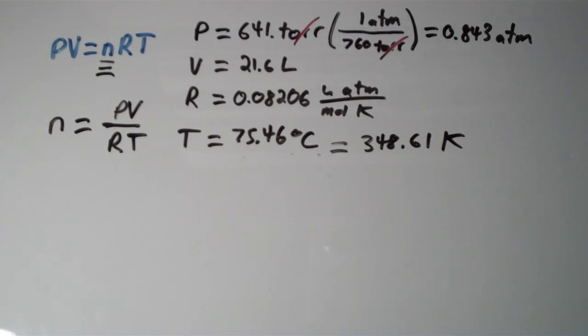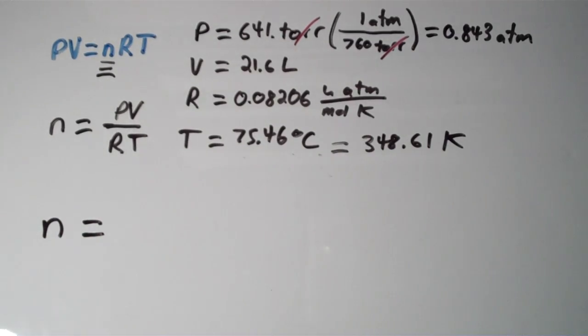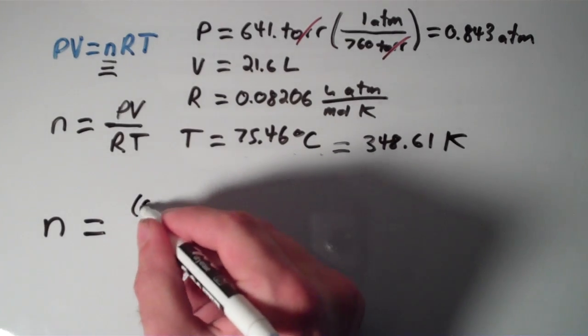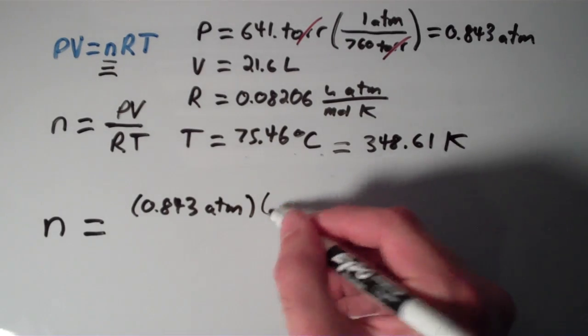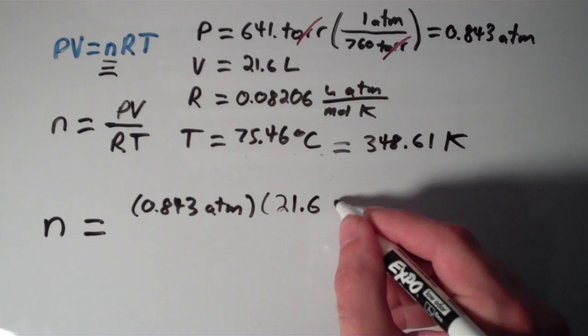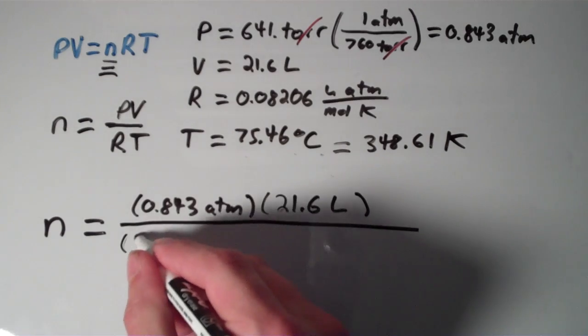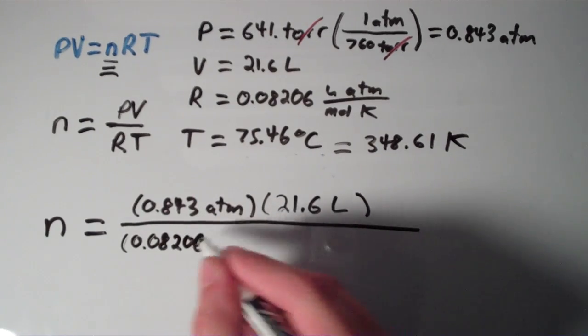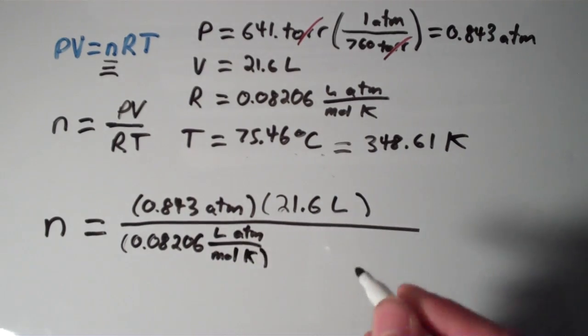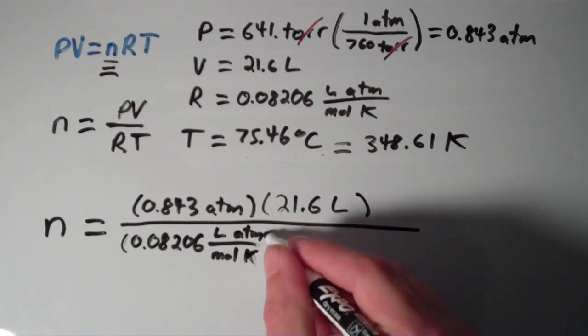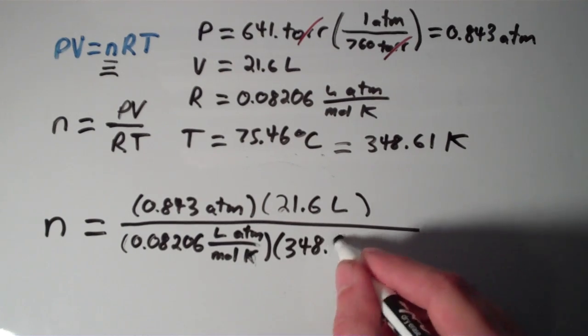So now we can just simply plug in all the values and solve for n. So I'm going to get that n is equal to PV, so that my pressure is 0.843 atm. My volume is 21.6 liters. My gas constant, R, is 0.08206 liters times atm over moles times kelvins. And then my temperature is 348.61 kelvin.